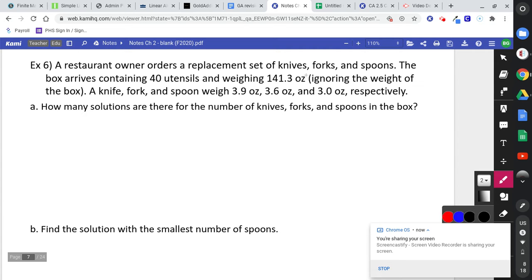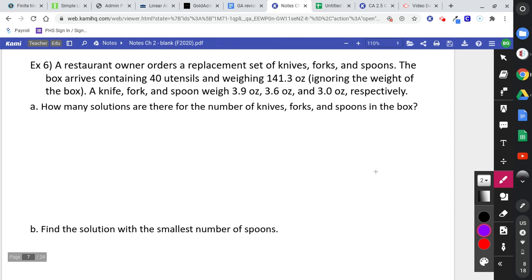A restaurant owner orders a replacement set of knives, forks, and spoons. The box arrives containing 40 utensils and weighing 141.3 ounces. Ignore the weight of the box. A knife, fork, and spoon weigh 3.9 ounces, 3.6 ounces, and 3.0 ounces, respectively. How many solutions are there for the number of knives, forks, and spoons in the box?